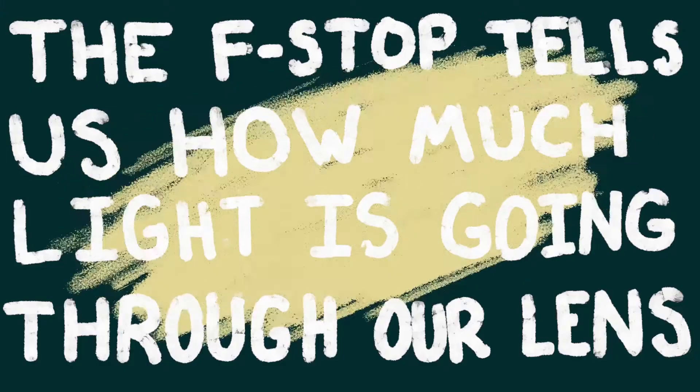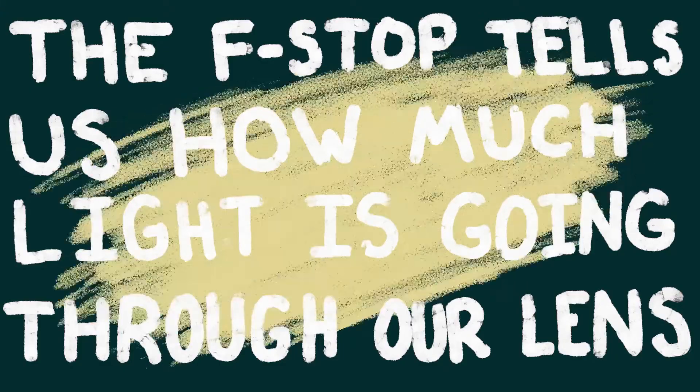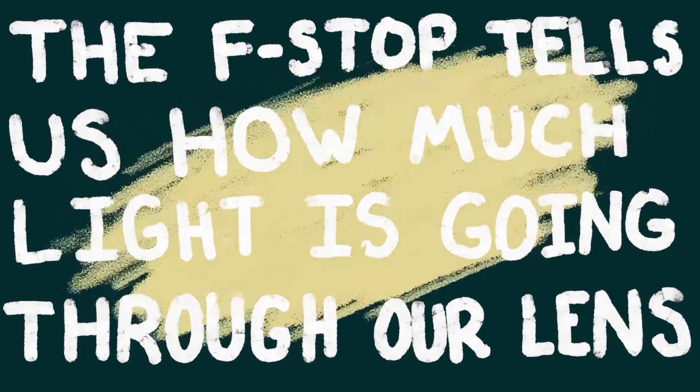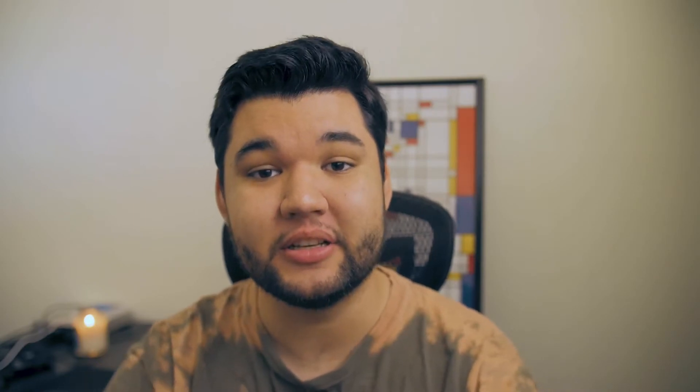Now that we've got the math out of the way, let's look at it in practical terms. In essence, the f-stop tells us how much light is going through our lens, and since it's a standardized number, the amount of light that we're getting for a certain f-stop will carry over between lenses of different focal lengths. There's a whole list of standardized f-stop measurements that you can see here.